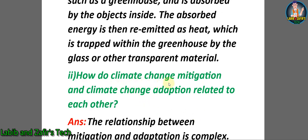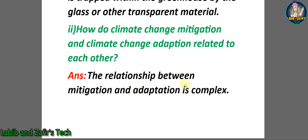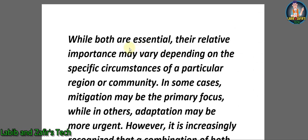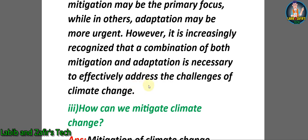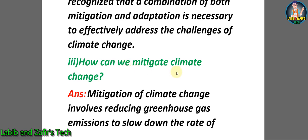Number two: how do climate change mitigation and climate change adaptation relate to each other? Answer: the relationship between mitigation and adaptation is complex. While both are essential, the relative importance may vary depending on the specific circumstances of a particular region or community. In some cases mitigation may be the primary focus, while in others adaptation may be more urgent. However, it is increasingly recognized that the combination of both mitigation and adaptation is necessary to effectively address the challenges of climate change.